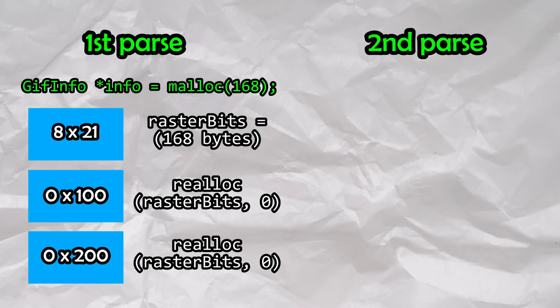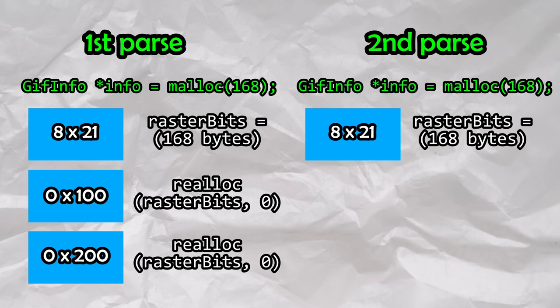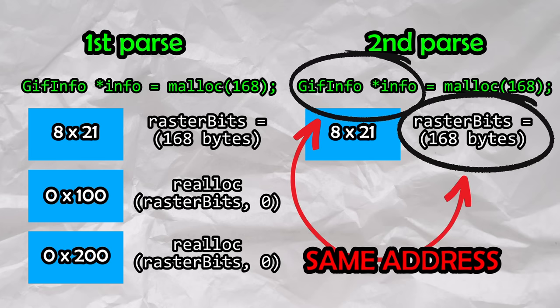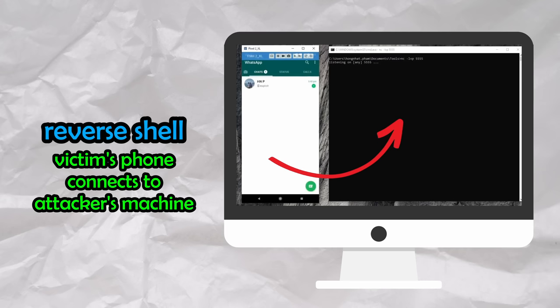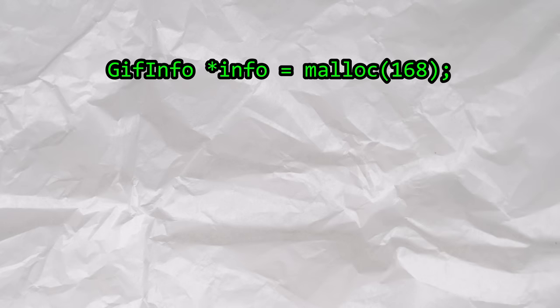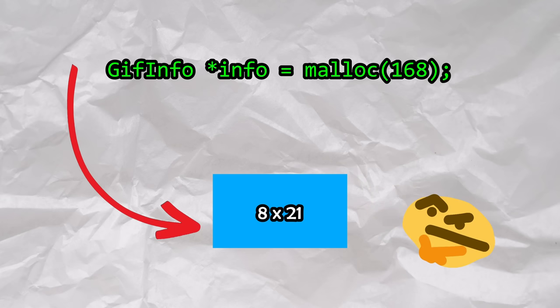Due to WhatsApp's double parsing behavior, the GIF is parsed again. The GIF info structure on the second parse is allocated with 168 bytes. When frame 1 is parsed, RasterBits is allocated with 168 bytes, which now returns the same memory address as the GIF info struct itself — due to the previous double free of a pointer with size 168. Normally this would just cause the app to crash, but the attacker took it further, leading to RCE, where he could open a reverse shell with access to the victim's phone.